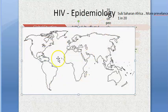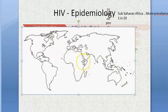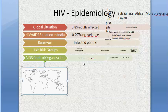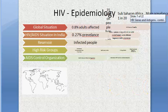One additional epidemiology point: in sub-Saharan African countries, the prevalence is approximately 1 in 20 people with HIV, so caution is needed when working there.